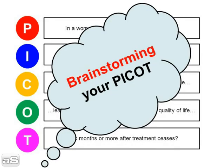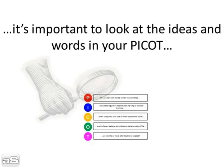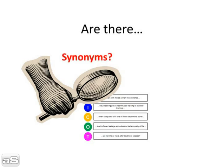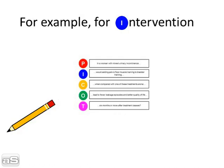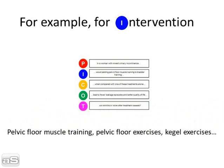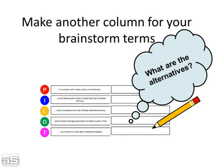The next step is brainstorming your PICO. To prepare for the research process, it's important to look at the ideas and words in your PICO. Are there any synonyms, regional spellings, broader terms, or narrower terms? Write it down. For example, for intervention — even better, make another column for your brainstorm terms.